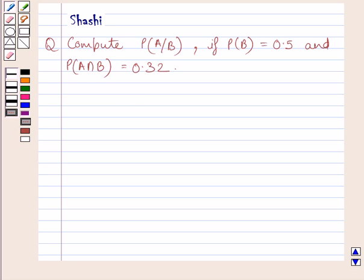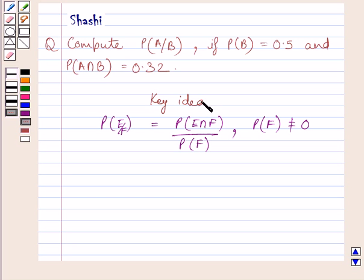First of all, let us understand that conditional probability of the event E, given that F has occurred, is equal to probability of E intersection F upon probability of F, where probability of F is not equal to 0. This is our key idea to solve the given question.